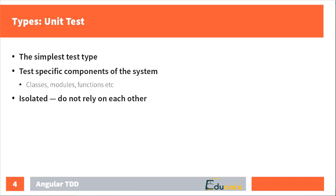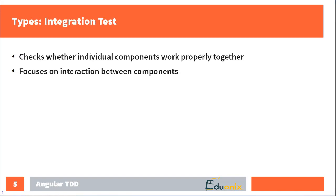One unit test usually covers only one specific element of your system. Your unit tests should not rely on each other, and usually they are run in a random order so that they do not interfere with one another. We will of course start with writing some unit tests in this course.